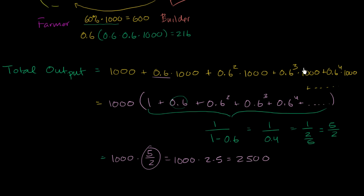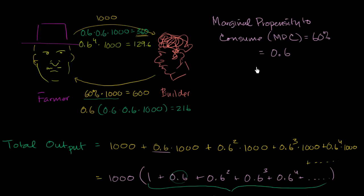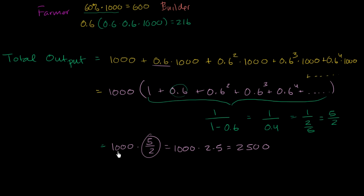So there are two interesting ideas here. One is the marginal propensity to consume: when people get a little more income, they spend some fraction of it — we're assuming it's linear at 60%. And then given that 60%, it keeps getting multiplied through the economy. You essentially have this multiplier effect: that original $1,000 got multiplied by 2.5. This 2.5 was completely a function of the marginal propensity to consume. The multiplier tells us: if you spend an extra dollar in this economy, given people's MPC, how much will total output increase?